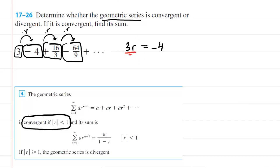And to do that, of course, we'll just divide both sides by 3. And we can see that the common ratio, r, is negative 4 thirds.